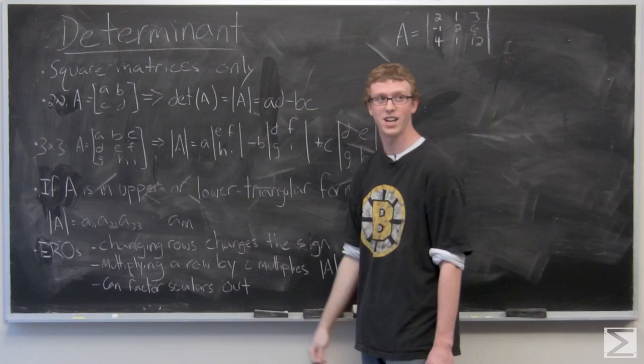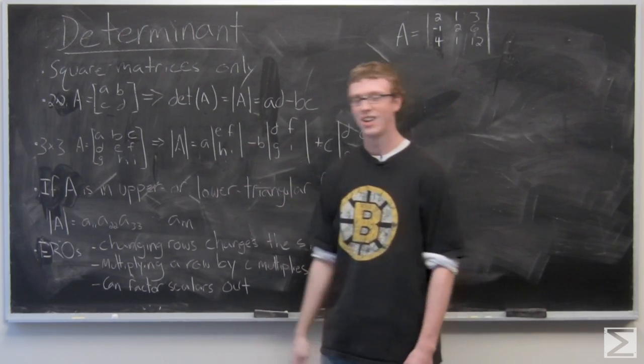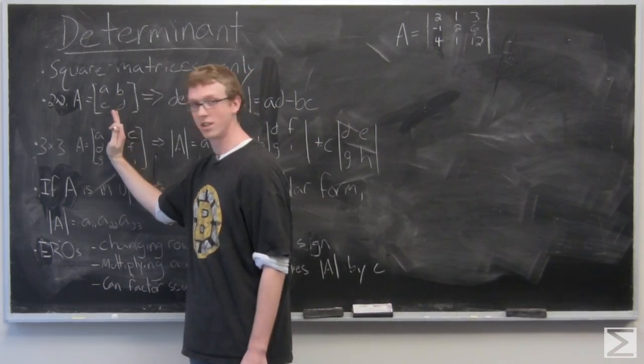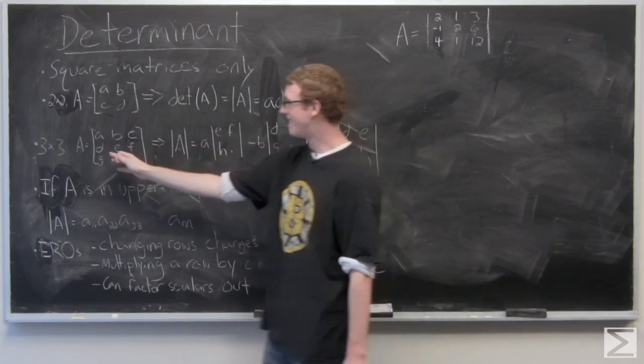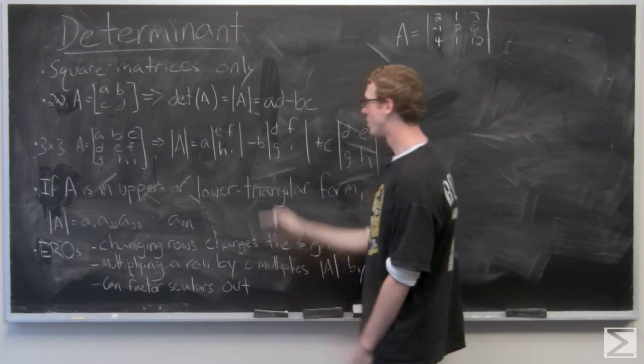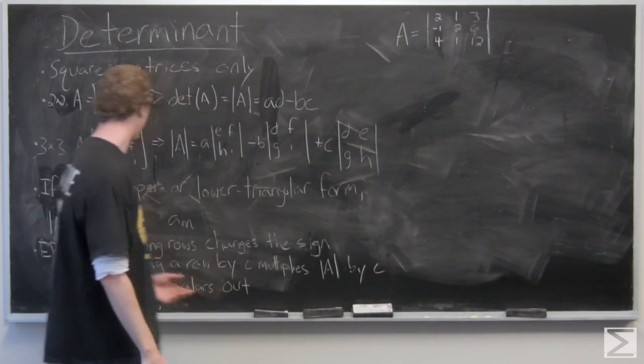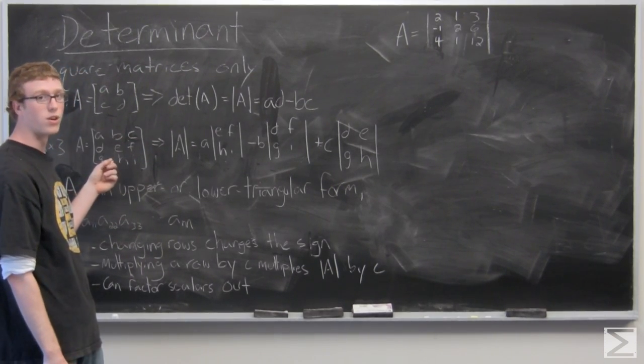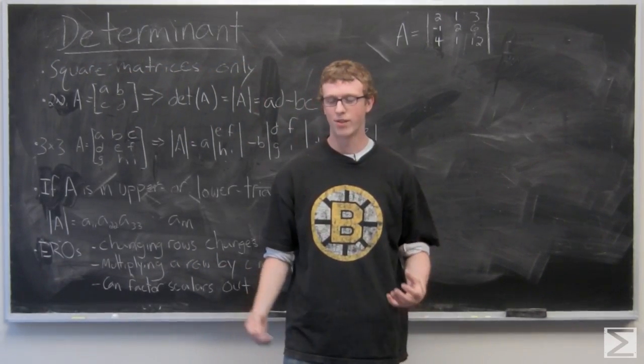And then you have a determinant of A is A times the determinant of EFHI. And then you take B, and with B we're subtracting, so cross out the second column in the first row, and then you subtract B times DFGI. Remember, you want to cross out that middle row. So you have minus B, DFGI, and then you're going to add C, and then you're going to cross out the rightmost column, topmost row. So you're looking for C times DEGH. So that's the determinant of a three by three matrix.